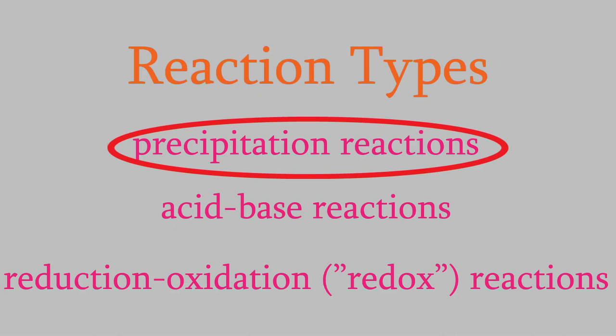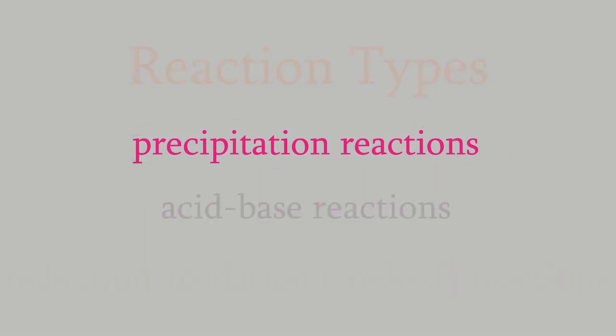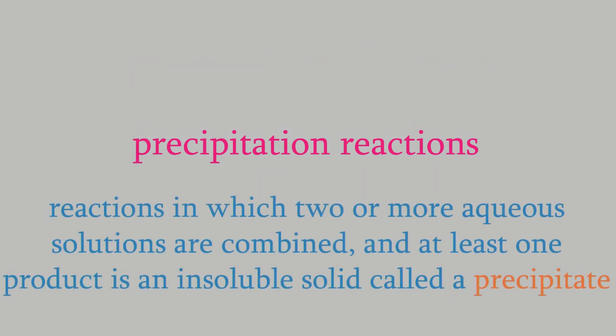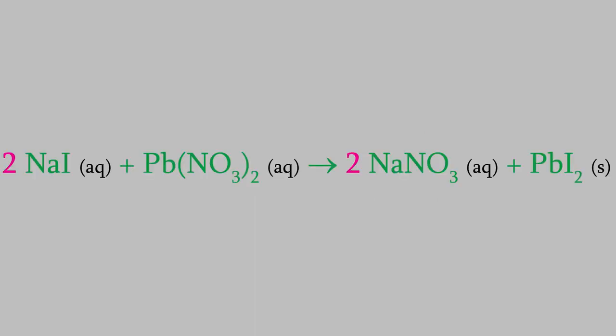A precipitation reaction is what happens when two solutions are combined and one of the products is an insoluble solid. So in other words, you combine two solutions and get a solid called a precipitate as a result. That makes precipitation reactions very easy to recognize when you see one in the lab.